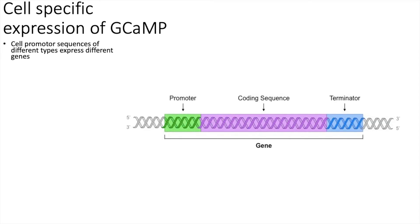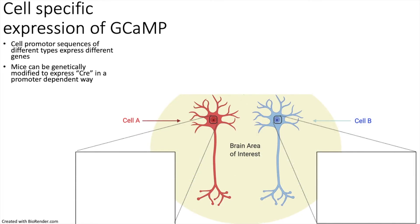What makes this system better than electrophysiology is the ability to record from specific cells. This is achieved using a genetic approach. Cells of different types express different genes and therefore contain different proteins. The cell determines which genes to express based on promoter sequences that precede the gene. Scientists take advantage of this promoter-dependent expression and genetically modify mice so that they express a protein called Cre under the control of a cell-specific promoter. As a result, all cells will have the Cre gene but only cells that transcribe genes containing that promoter will have the Cre protein.